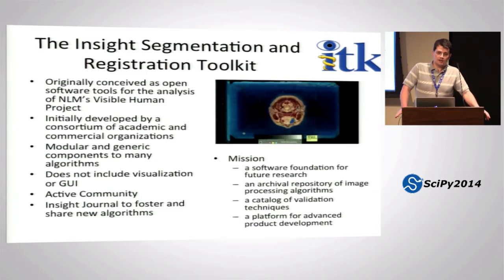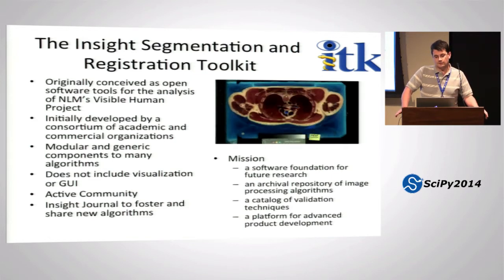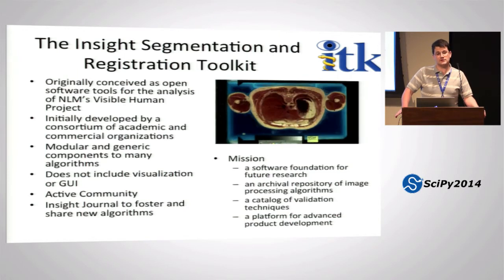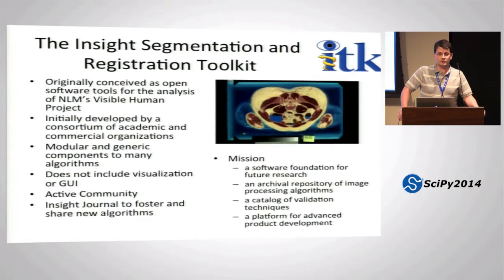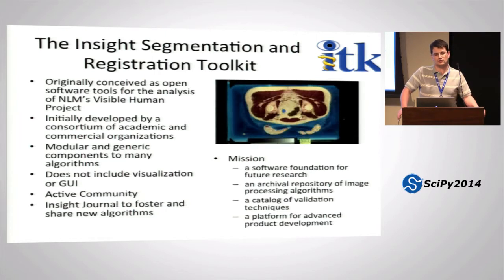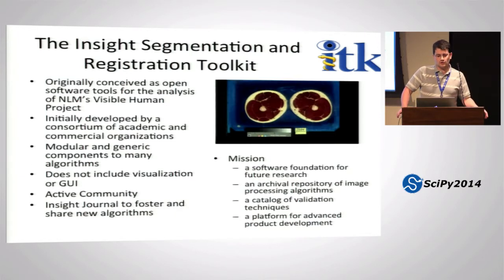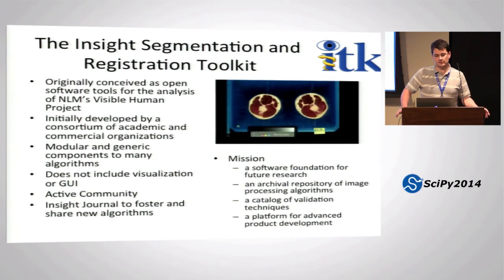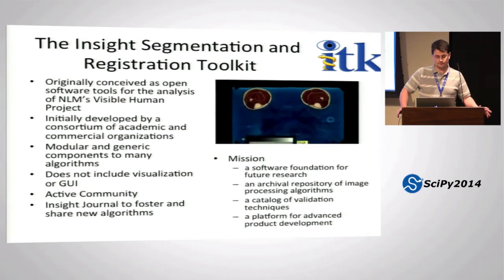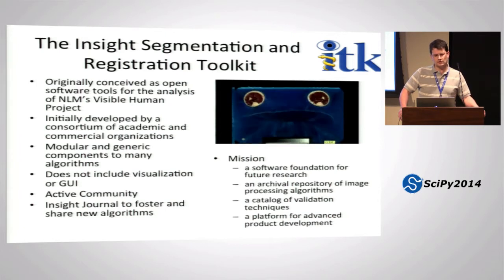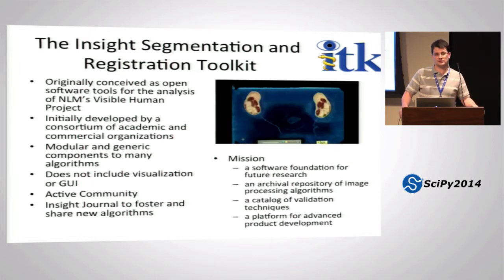ITK was initially conceived by the National Library of Medicine in 1999 as an initiative for open source software tools to analyze the visible human data set. It was developed by a group of academic and commercial organizations including Kitware, GE, University of Utah, University of Pennsylvania, and UNC Chapel Hill. Its goals were to provide a foundation for research in image processing and biomedical image computing, along with a catalog of algorithms. This led to a very modular and component-oriented design where you can mix and match components to solve problems.